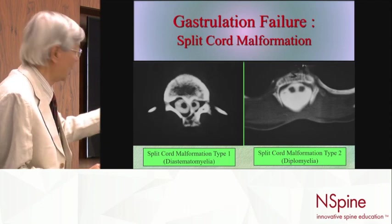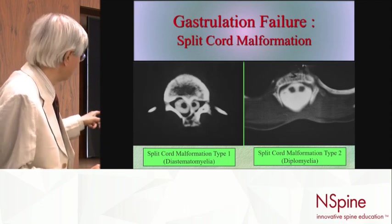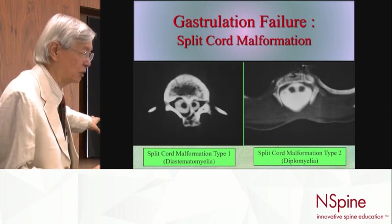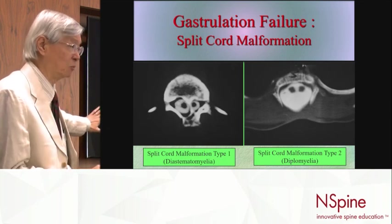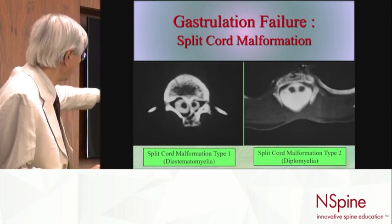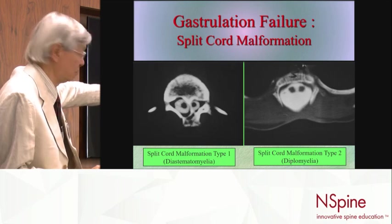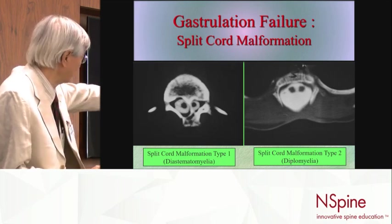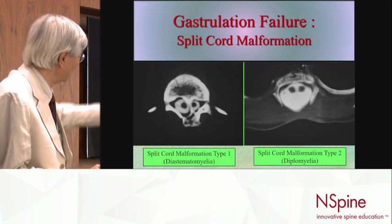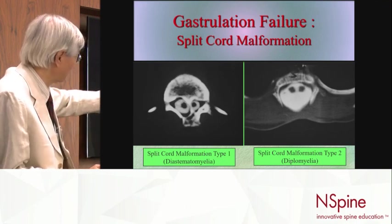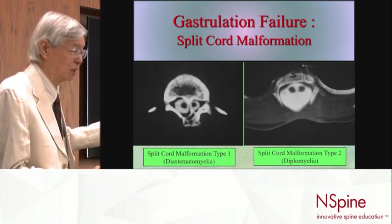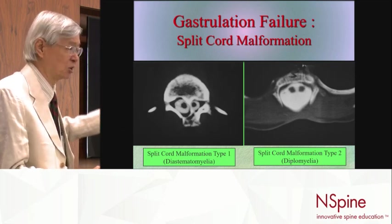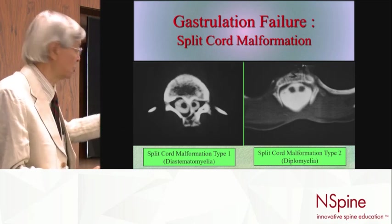There are two types. Type 1 is what was in the old days called diastematomyelia. We don't use that term anymore, and what it is is that it has a bone spike in the middle and two dural sacs. Type 2 would be a single dural sac with no obvious bone spike in the middle, but there are other elements of tethering of the hemichords itself.